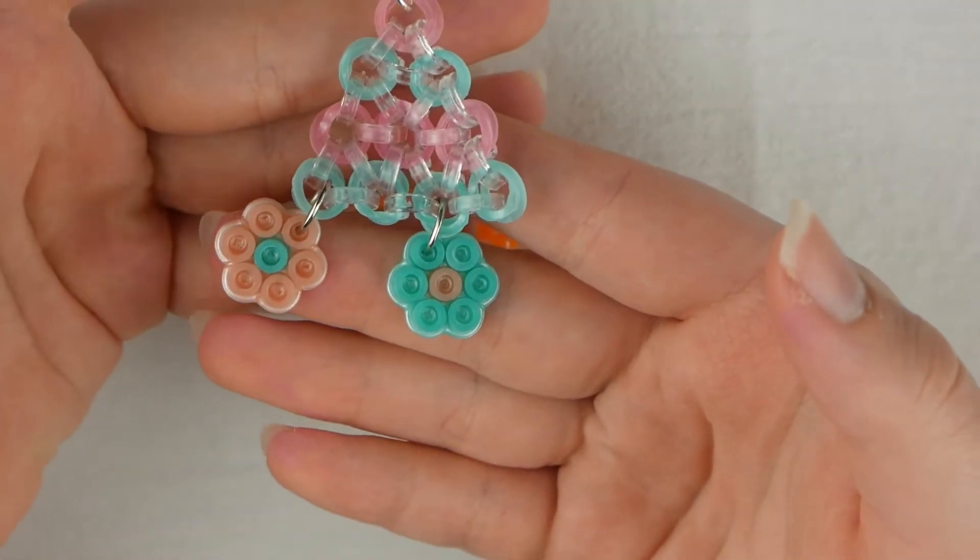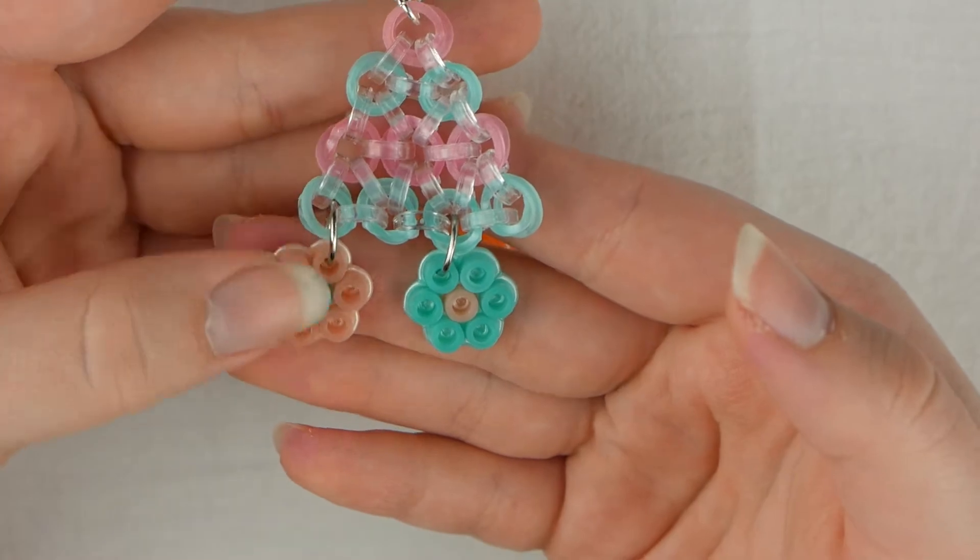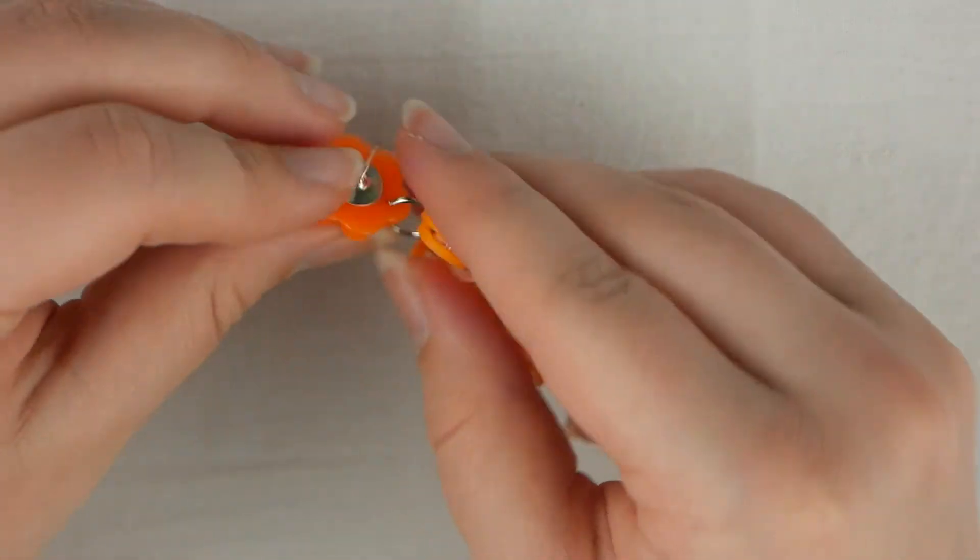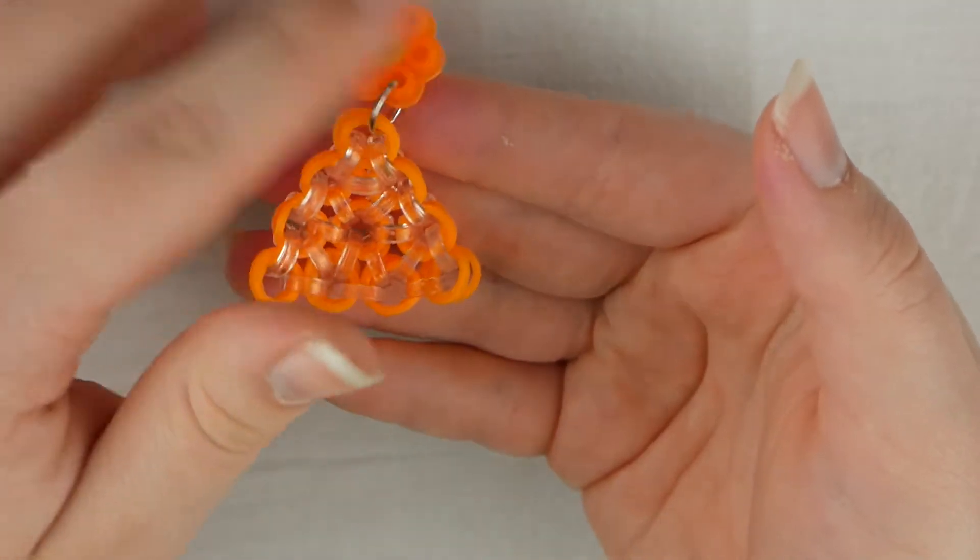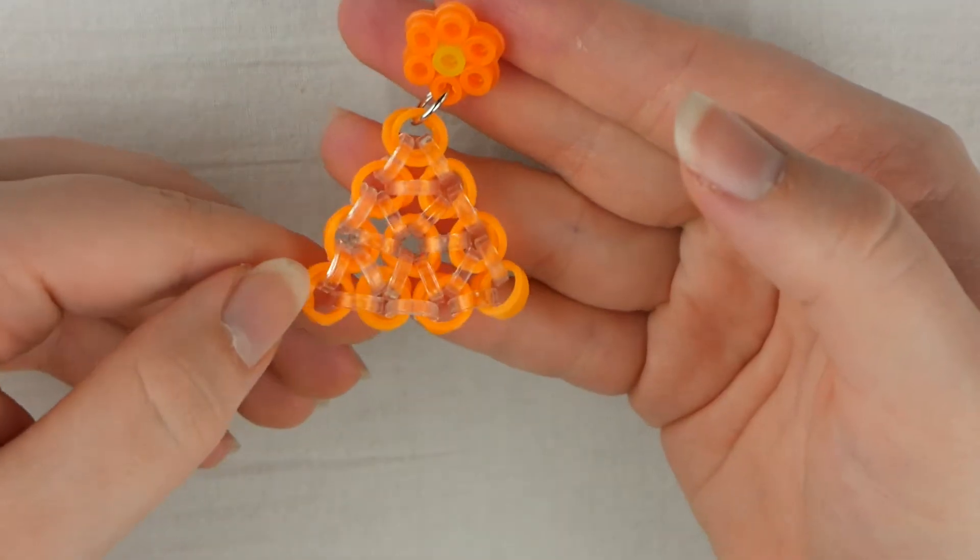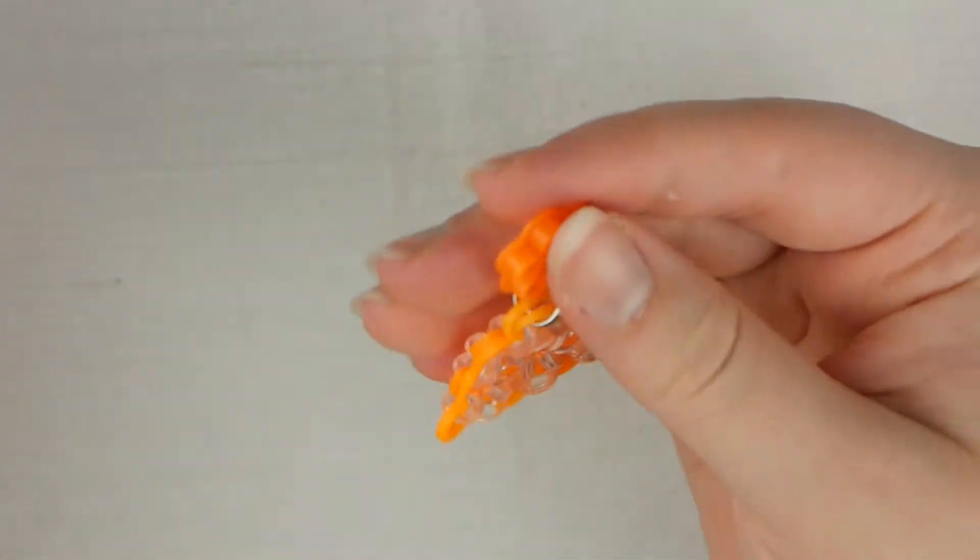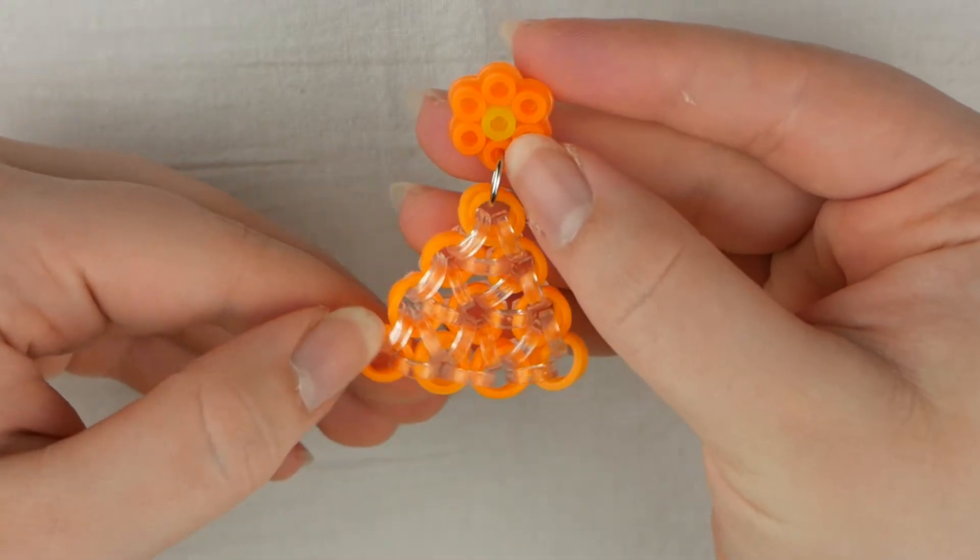I'm just going to show you these real quick. This first one just has Perler bead flowers dangling off of it, and then this one is actually a stud earring. That's the only thing that's different about it, but you could still make something like this and add something dangling off the bottom of it.